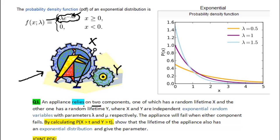Okay, so here we've got a machine and we've got two components X and Y. Actually, X and Y is not the components themselves, it's just the lifetime of these components. We are told further that they are independent exponential random variables, so we can just denote here X tilde exp, stands for exponential, one is distributed with parameter lambda, the other one is also an exponential variable distributed with parameter mu. So we are further told here that the appliance will fail when either component fails. And we are asked to calculate probability that X greater than t and Y greater than t, and by doing so, show that the lifetime of the appliance also has an exponential distribution and give the parameter.